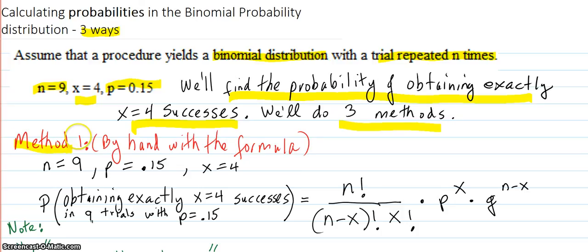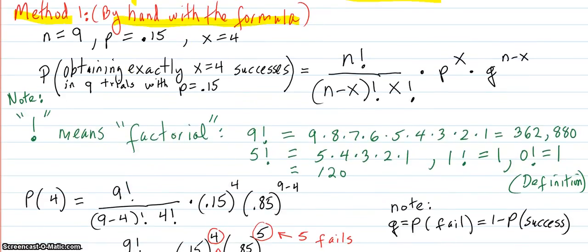Assume that a procedure yields a binomial distribution with a trial repeated n times. Let's say n is 9. The probability of success each time is 0.15, and we're going to go for four successes. In other words, we're going to find the probability of obtaining exactly four successes, and we're going to do three methods of doing that.